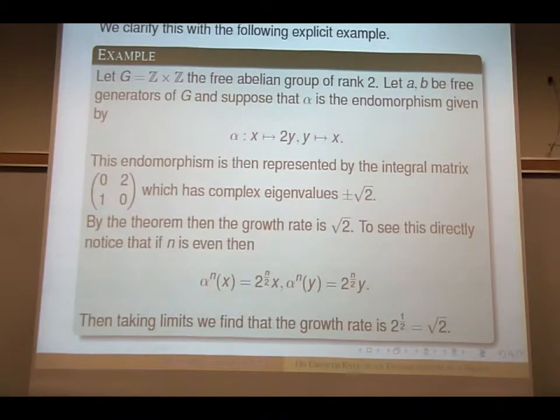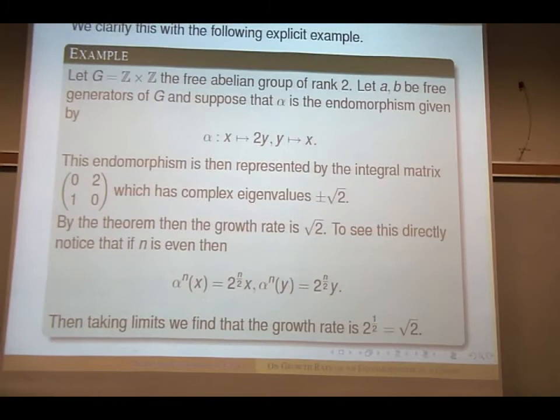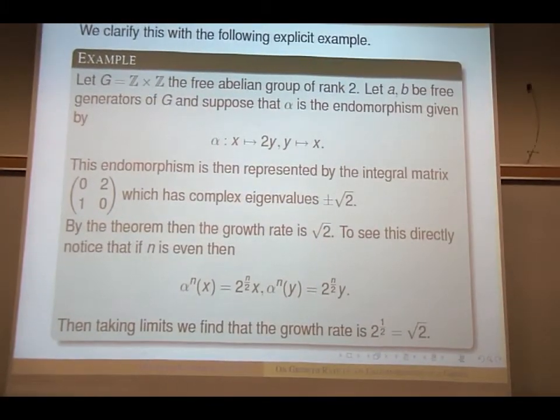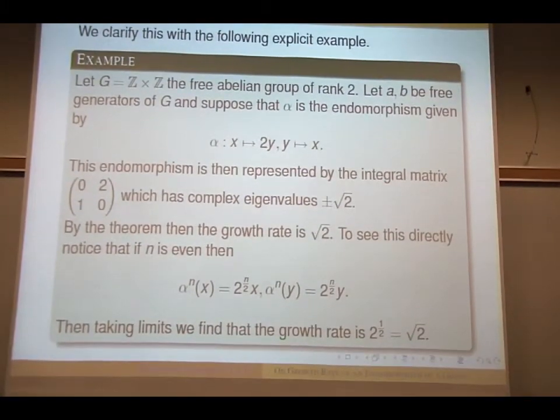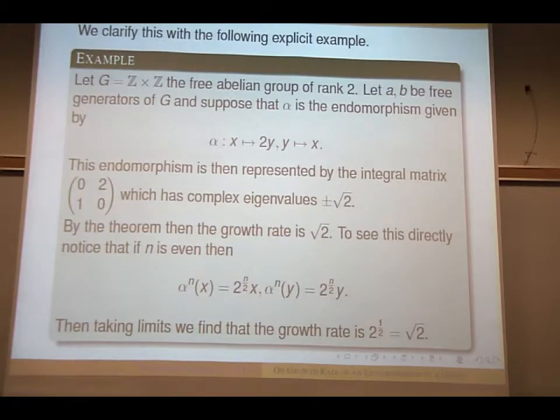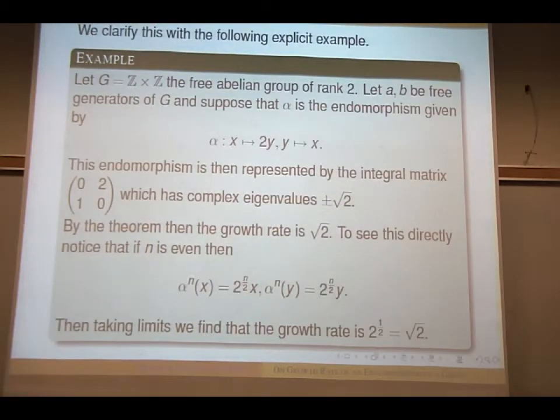So let's look at another example, a simple example. Suppose your group is a direct product of Z cross Z, be free abelian group of rank two, and let A and B be free generators of G. And suppose alpha, the endomorphism sends x to 2y and y to x.